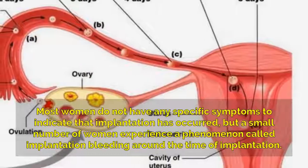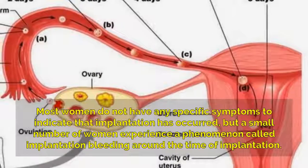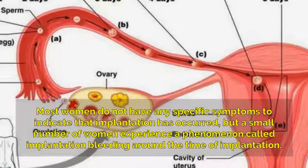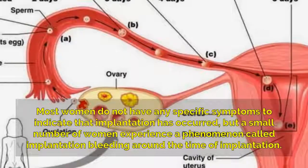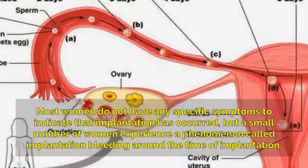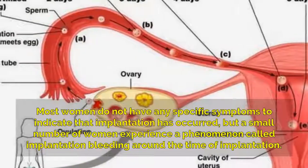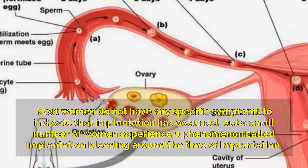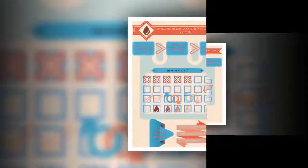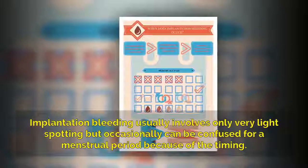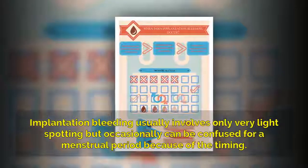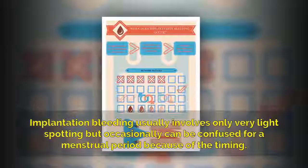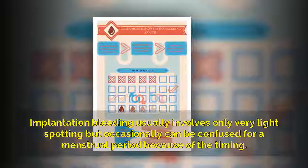Most women do not have any specific symptoms to indicate that implantation has occurred, but a small number of women experience a phenomenon called implantation bleeding around the time of implantation. Implantation bleeding usually involves only very light spotting, but occasionally can be confused for a menstrual period because of the timing.